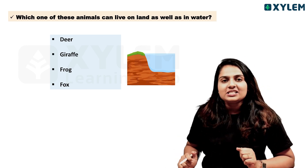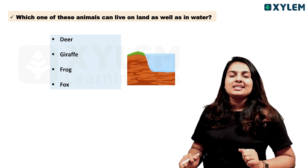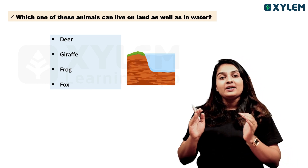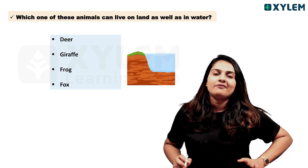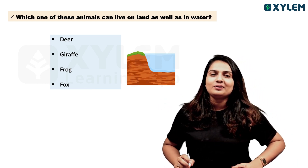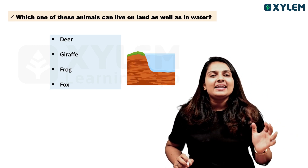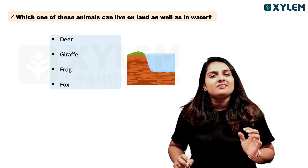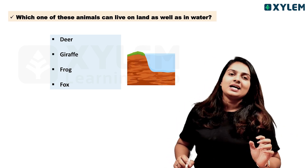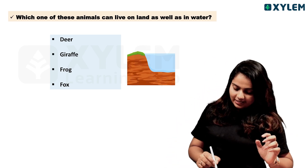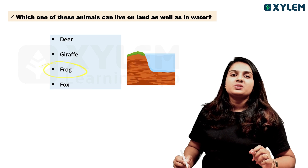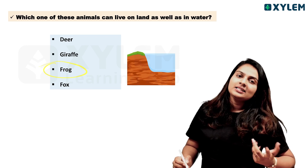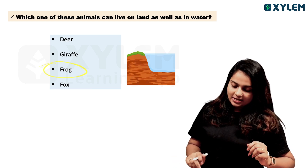Let's look at the options. The frog can live on land as well as in water. So Option C, frog, is the correct answer.